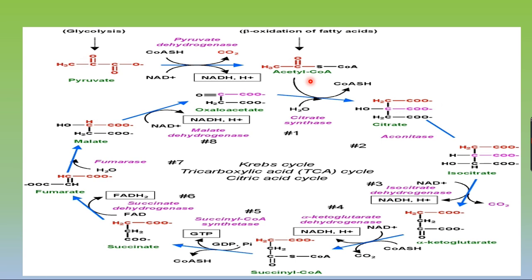The second type of reaction involves dehydration — the removal of a water molecule. The enzyme aconitase converts citrate into cis-aconitate, and then through a hydration step, into isocitrate. So both dehydration and hydration occur here, yielding the compound isocitrate.